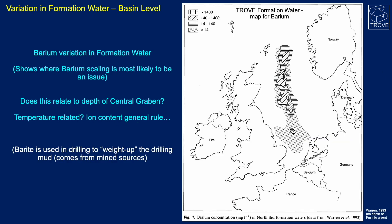Here's a map from the Warren and Smalley paper showing the concentration of barium across the North Sea, contoured up. Barium varies quite a lot and we're interested in it because barium-rich formation waters, when we inject sea water into the formation for pressure maintenance, can lead to the formation of barium sulfate. Sulfate is very rich in sea water. Barium sulfate is one of these compounds that precipitates out - it can precipitate in the formation, in the near wellbore, in the perforation tunnels, in the tubing, all the way through the pipelines up to the platform, into the separators and the production plant. So it is really something we have to understand and engineer a solution for.